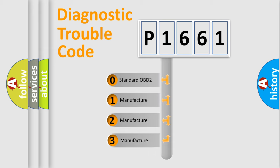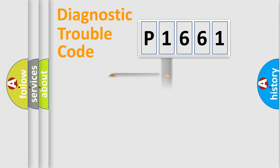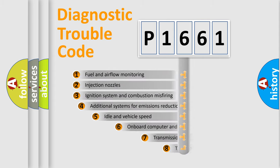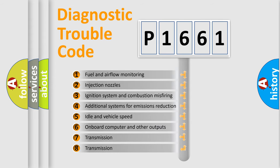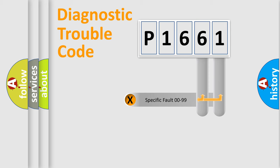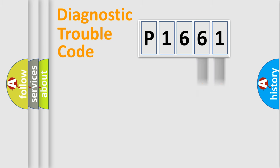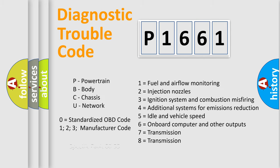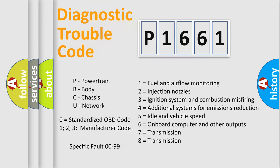If the second character is expressed as zero, it is a standardized error. In the case of numbers 1, 2, or 3, it is a manufacturer-specific error expression. The third character specifies a subset of errors. This distribution is valid only for the standardized DTC code, and only the last two characters define the specific fault of the group. Such a division is valid only if the second character is expressed by the number zero.